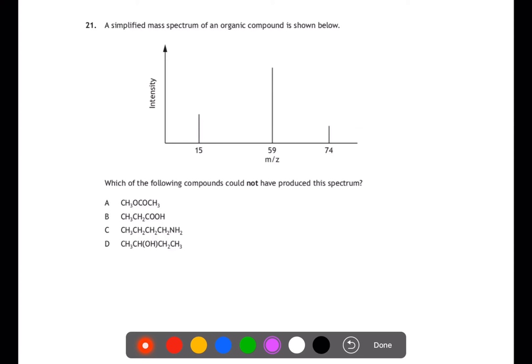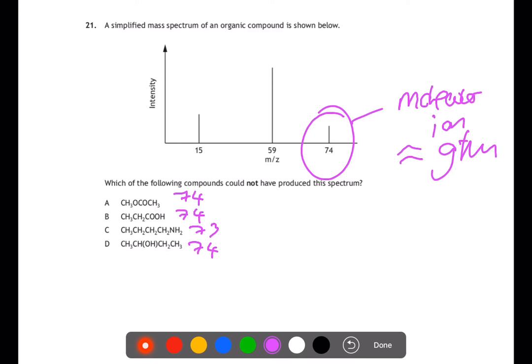Question 21. A simplified mass spectrum of an organic compound is shown below. Which of the following compounds could not have produced this spectrum? When looking at this spectrum the key to working out which one of these could not produce the spectrum is to look at this peak here, 74. This is your molecular ion and is equivalent to your GFM. If you work out the GFM of each of these compounds you'll find the first one is 74. The second is 74. The third is 73. And the last one is 74. So it's not possible for C to produce this mass spectrum because it only has a GFM of 73.